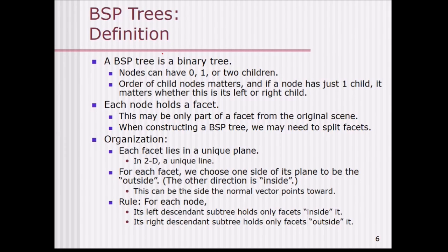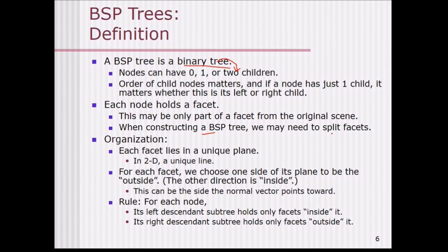The BSP tree is a binary tree. Nodes can have 0, 1, or 2 children, and the order of child nodes matters. If a node has one child, it matters whether it is a left child or right child. Each node holds a facet, and this may be only part of a facet from the original scene.